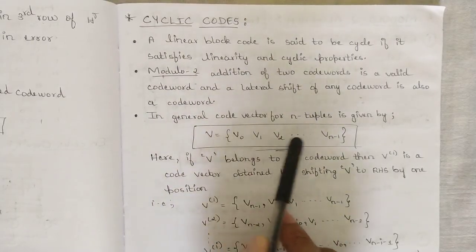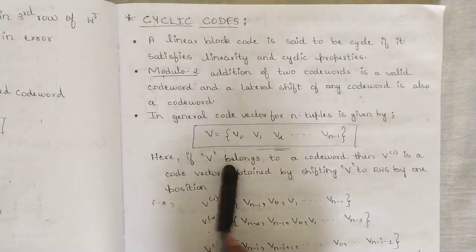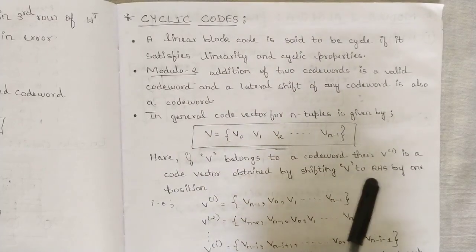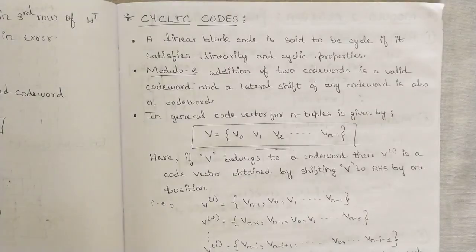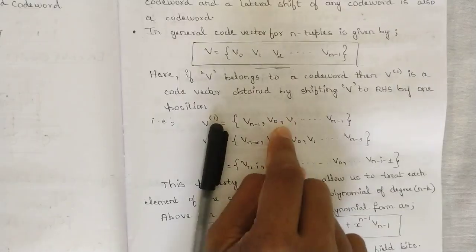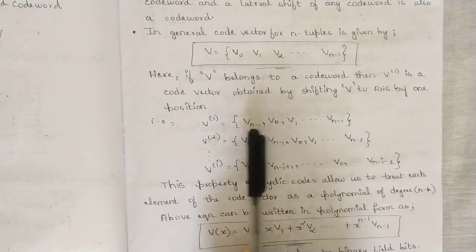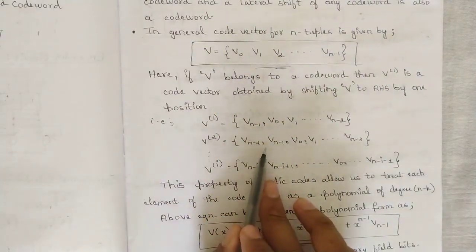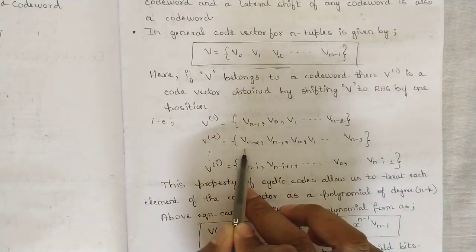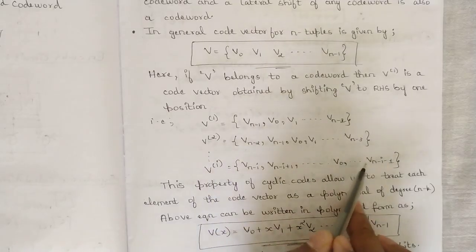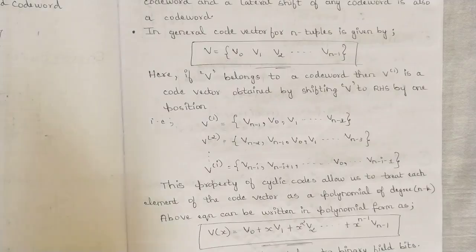The code vector v is given by (v₀, v₁, v₂, ..., v_{n-1}). If v belongs to the code word, then v⁽¹⁾ is a code vector obtained by shifting v to the right by one position. So v⁽¹⁾ is given by (v_{n-1}, v₀, v₁, ..., v_{n-2}), and this continues up to v⁽ⁱ⁾ = (v_{n-i}, v_{n-i+1}, ..., v₀, ..., v_{n-i-1}). This is how code vectors for cyclic codes are generated.